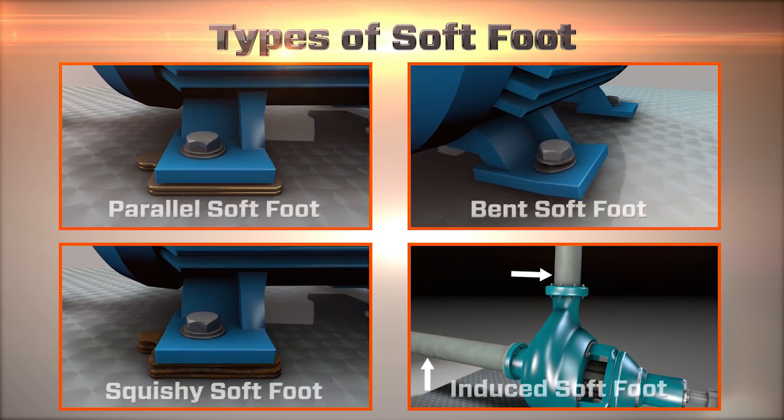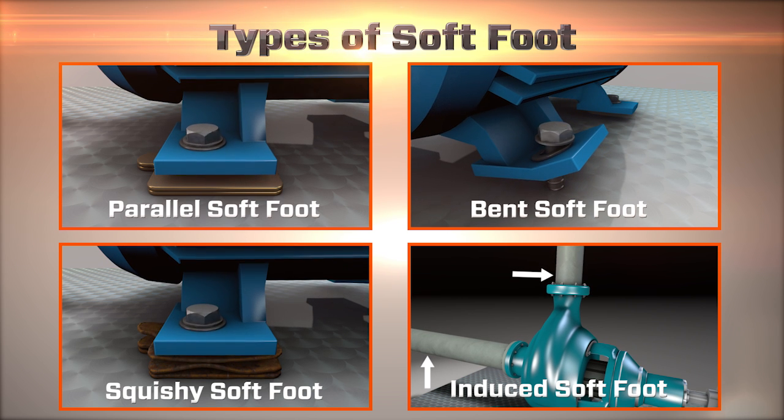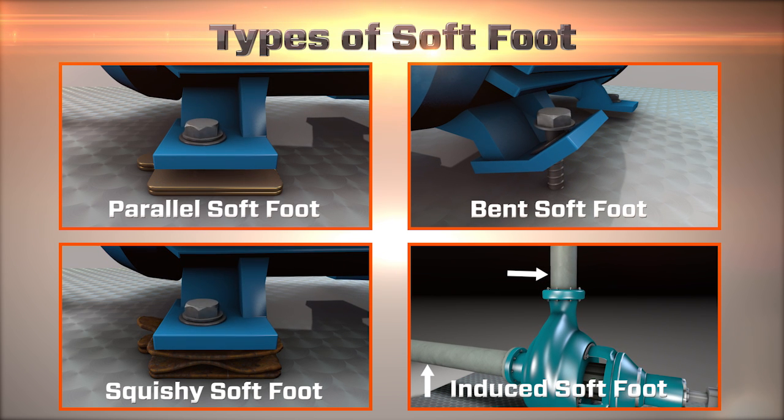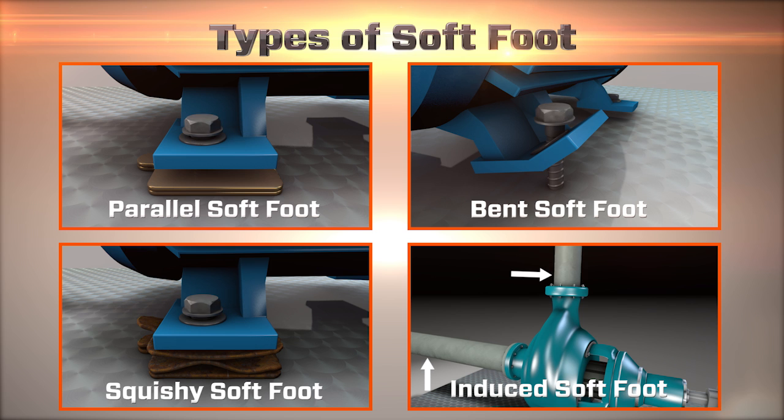There can be many different causes for machine frame distortion which are diagnosed as different types of soft foot for the purpose of correcting this distortion. All of these conditions cause the machine frame to distort.